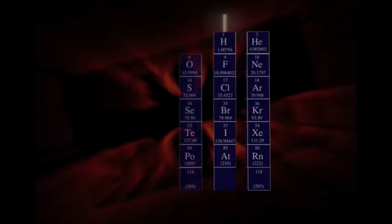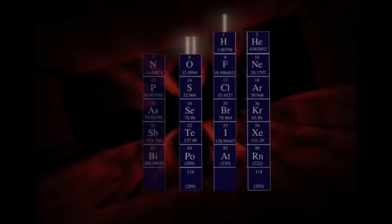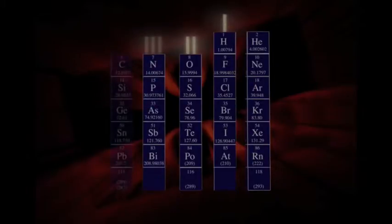The rightmost column in the table has no great urge to make bonds with other atoms. The column to its left wants to make one bond. The second column from the right wants to make two bonds. Third column atoms want to make three bonds, and so on.